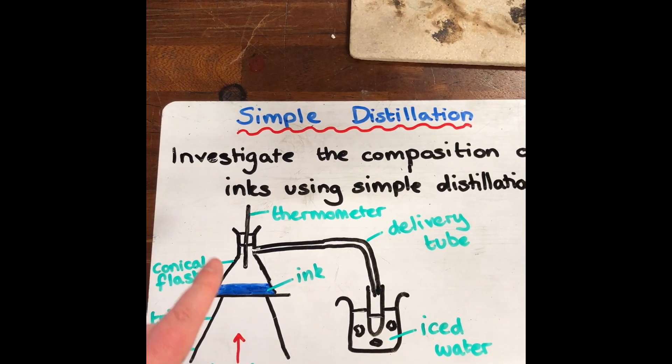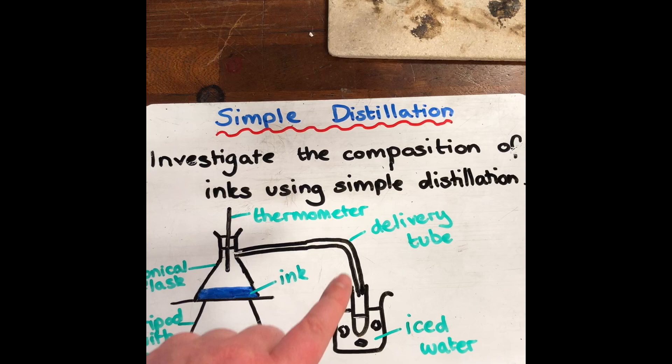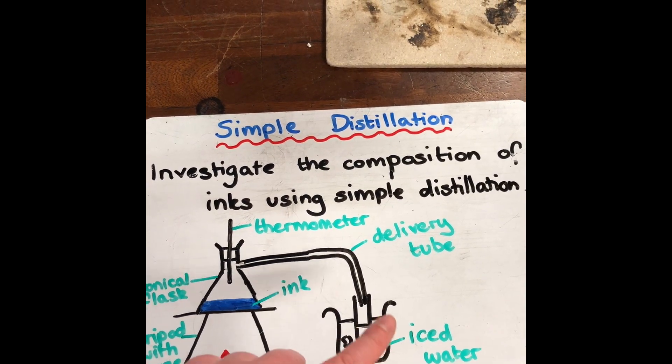What then happens is when the water boils from here, it then passes through the delivery tube and it condenses in the iced water. And that's why the water needs to be iced.